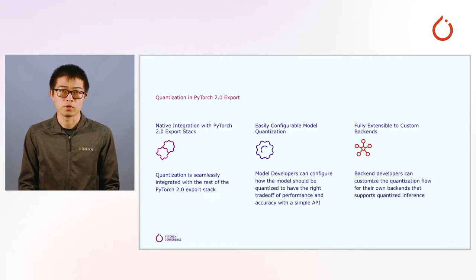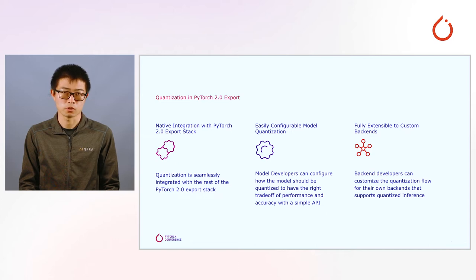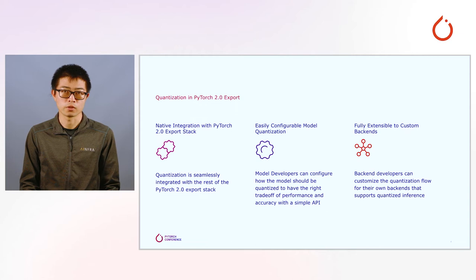Secondly, with Torch Dynamo we have more information — such as tensor dtype for each node in the model graph — which allows us to build a more robust quantization transform. Overall, quantization will seamlessly integrate with the rest of the PyTorch 2.0 export stack.